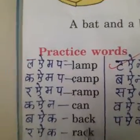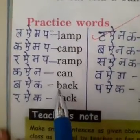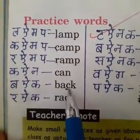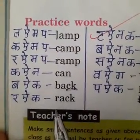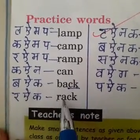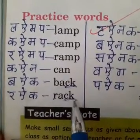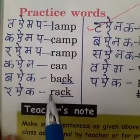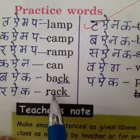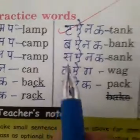But we will speak K for one time only. B, A, K — Back. R, A, K — Rack. R, A, K — Rack.